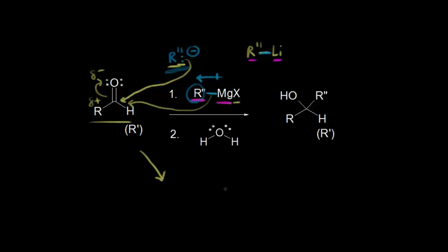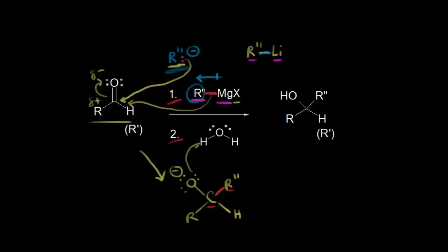Once the nucleophile attacks the carbonyl carbon, we push these electrons off onto the oxygen. The intermediate has the carbon now bonded to the R double prime group, with a negatively charged oxygen — an alkoxide anion — along with an R group and a hydrogen if we started with an aldehyde. Those electrons form the new carbon-carbon bond. In the next step — which must be kept separate — we add a proton source such as water to protonate the alkoxide intermediate, giving us an alcohol as the final product with a new carbon-carbon bond formed.